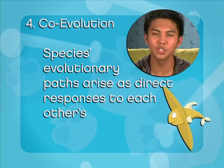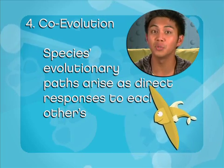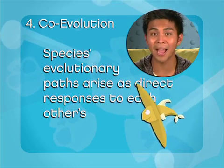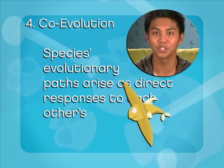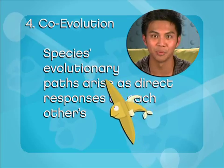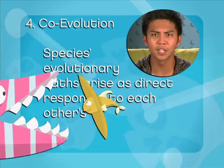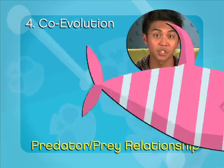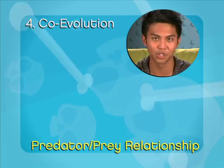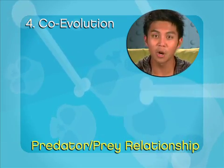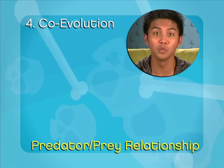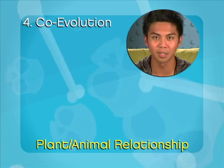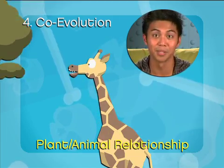Co-evolution describes two species whose evolutionary paths arise as direct responses to each other's, such as in a predator-prey relationship. There are also many co-evolutionary relationships between animals and plants.